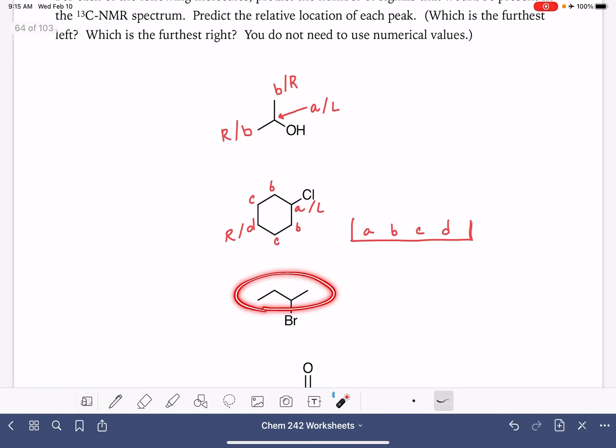For this molecule, all of the carbons are unique, so there's four different types, four different peaks. In terms of chemical shift, this one is going to be the furthest to the left because it's closest to the bromine. A is going to be furthest to the right because it's further away from the bromine. B and D are going to be pretty similar in location because they are the same distance from the bromine.